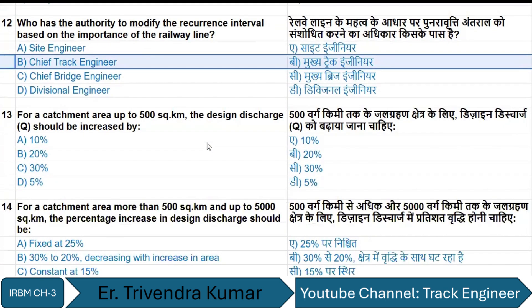For a catchment area up to 500 square kilometers, the design discharge Q should be increased by 30%.